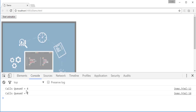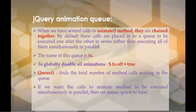This is what the queue and dequeue methods do. I hope you understood what the animate method is, why we chain them together, what the queue method does, how to find the length of the queue, and that the default queue name is 'fx'.